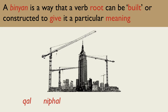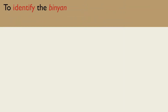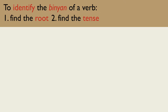The five Binyanim are Kal, Nifal, Piel, Hifil, and Hispal. To identify the Binyan of a verb, we need to complete three stages. First find the root, then find the tense, and then you will be in a position to identify the Binyan. It is important to complete all three stages in the process, as skipping a stage can lead you to the wrong Binyan.